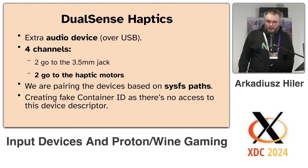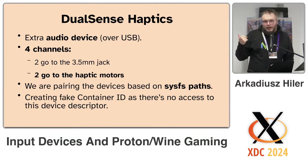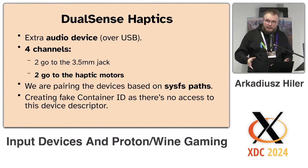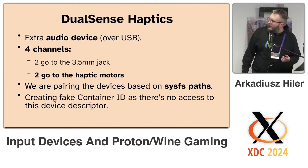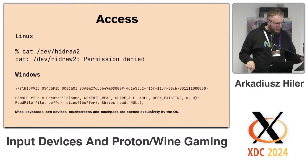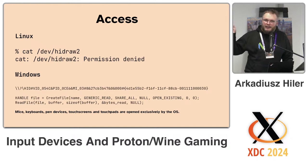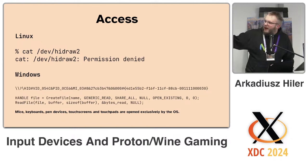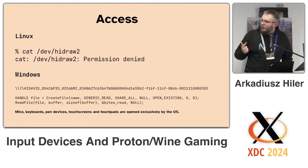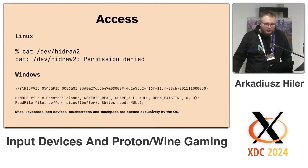On Linux, when you try to access any of the HIDraw devices, you get permission denied. On Windows, it's a bit more complex, but basically you open a file and read from it, and you can access almost all devices other than sensitive ones. Windows limits access to mice, keyboards, pen devices, touchscreens and touchpads — because those are used to type passwords and you don't want keyloggers sniffing on that. That's a quite sensible policy.